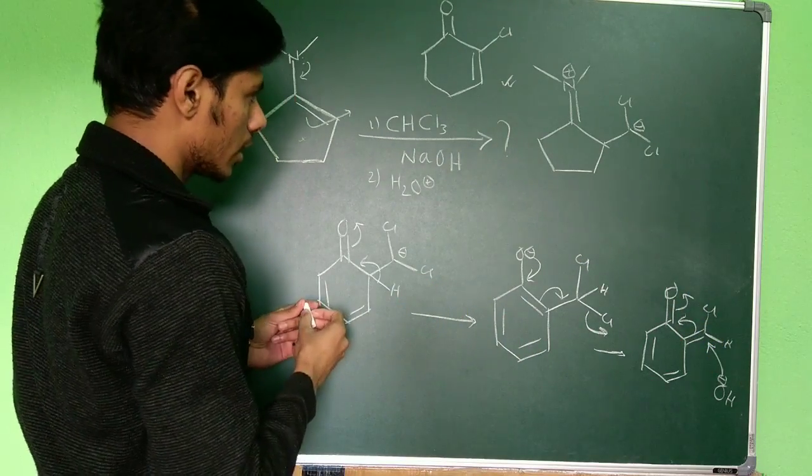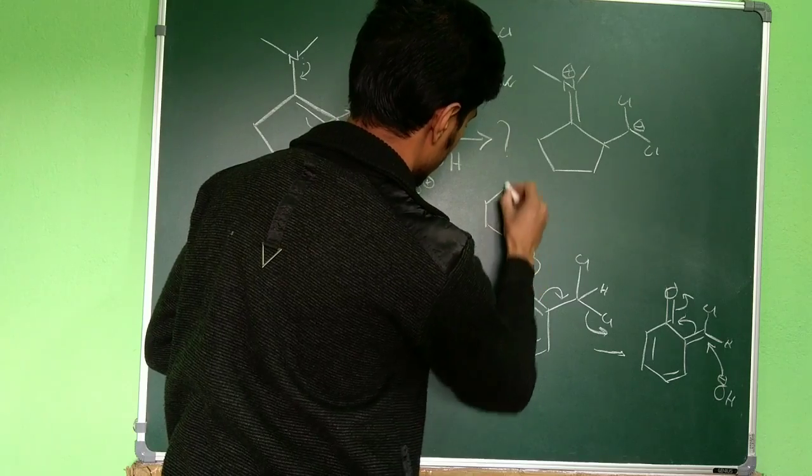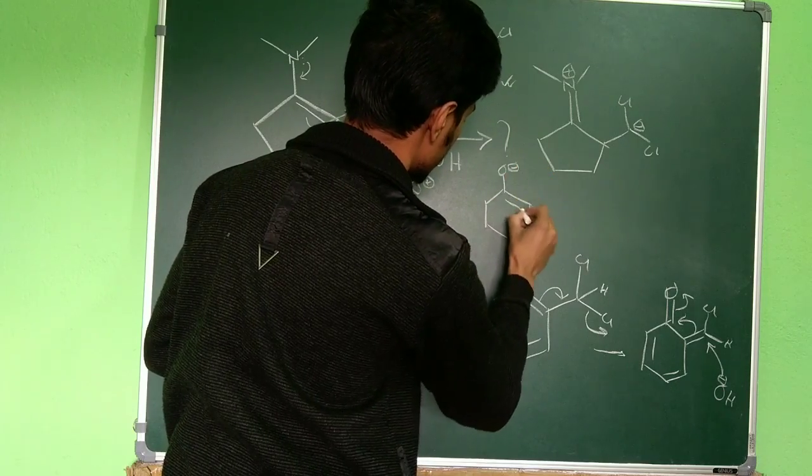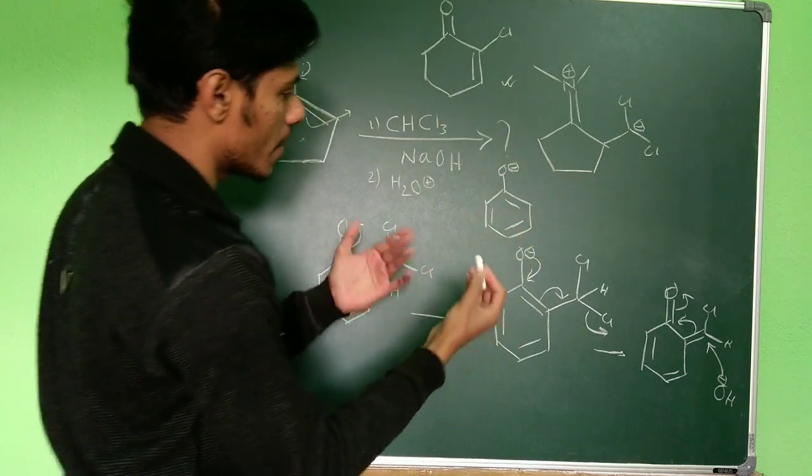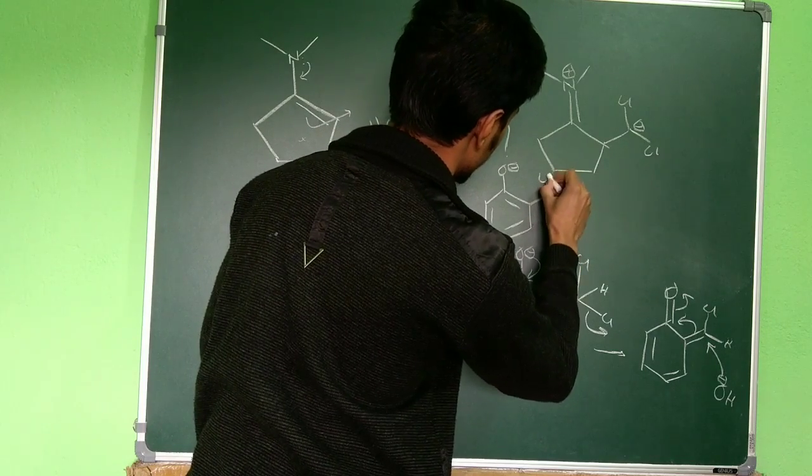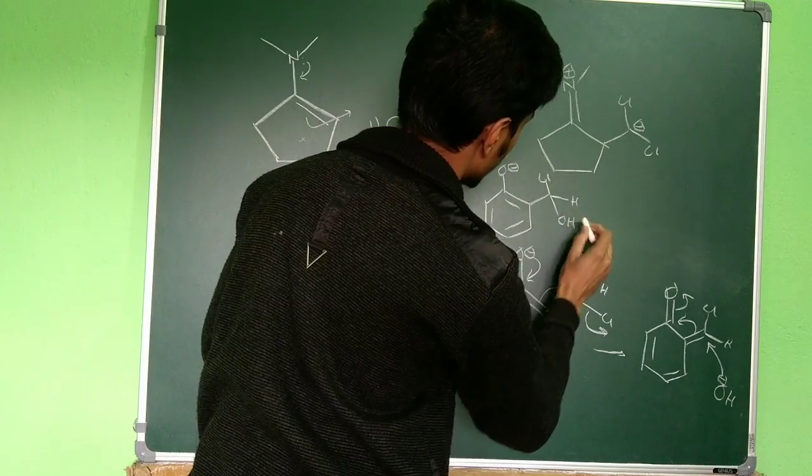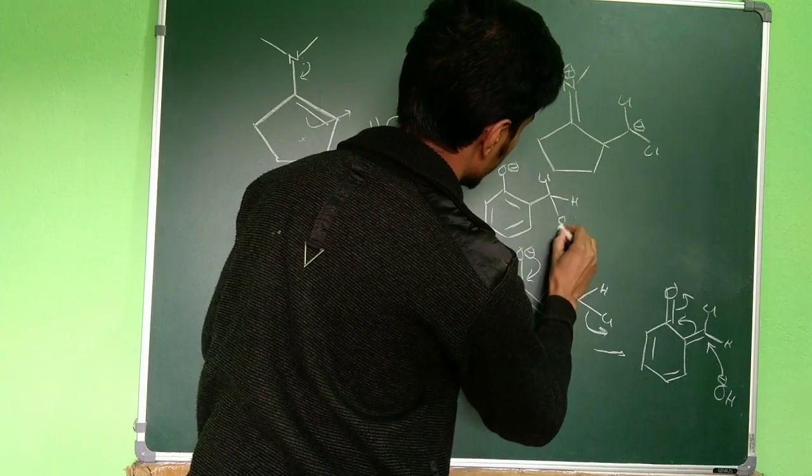Then this O minus again pushes, this one will go here and this chloride will go. And now this O minus, because you're doing the reaction in basic medium, this O minus will attack here.